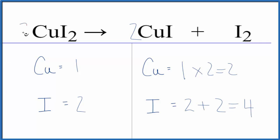Now if I put a two in front of the CuI2, I have one times two, that balances the copper. Two times two for the iodine, that balances the iodine.